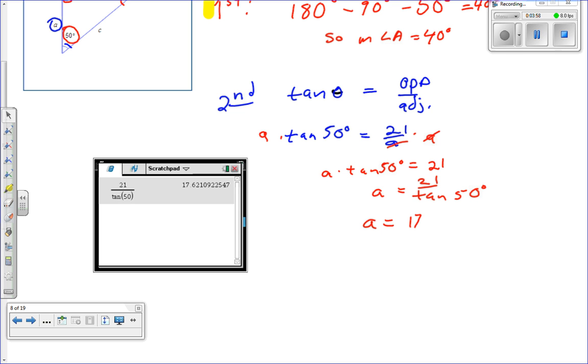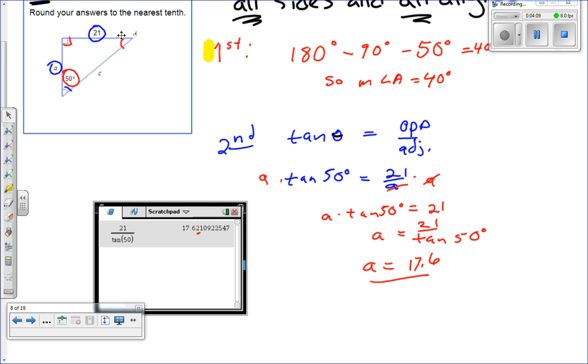17.6 because that's a 2, so 2 doesn't round up. 17.6. And you're done. So we found the A.